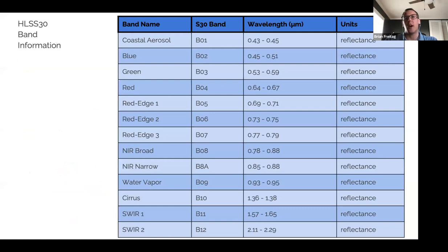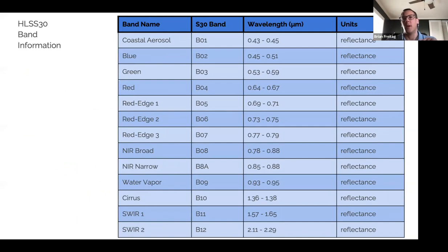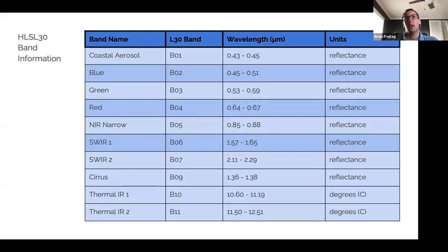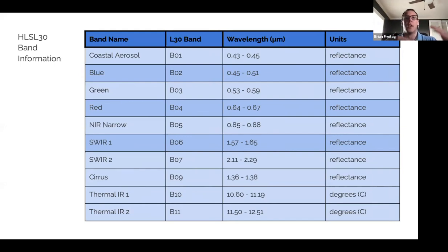For the HLS S30 product — the Sentinel component — we have 13 bands listed with their wavelengths; all units are in reflectance. We output one data band per file, so band one is in its own file, band two in its own, and so on — 13 individual band files for Sentinel. For the L30 Landsat component, bands run through the shortwave IR in reflectance values, with thermal IR bands in degrees. All Landsat 8 and Landsat 9 bands are contained in a single band file per band.